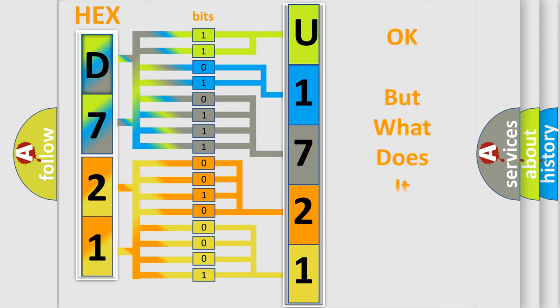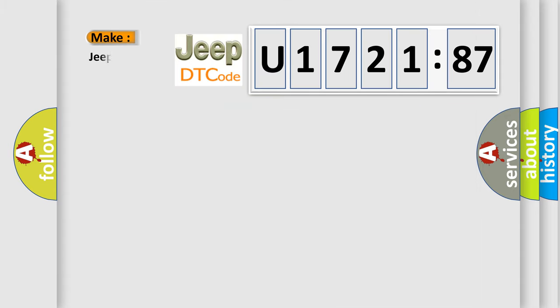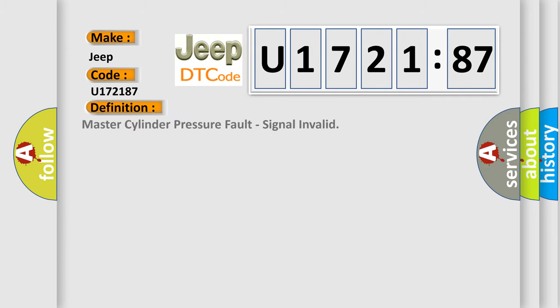The number itself does not make sense to us if we cannot assign information about what it actually expresses. So, what does the diagnostic trouble code U172187 interpret specifically for Jeep car manufacturers? The basic definition is Master Cylinder Pressure Fault, Signal Invalid.